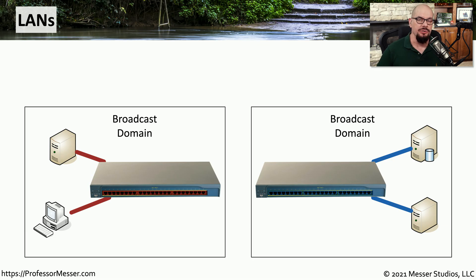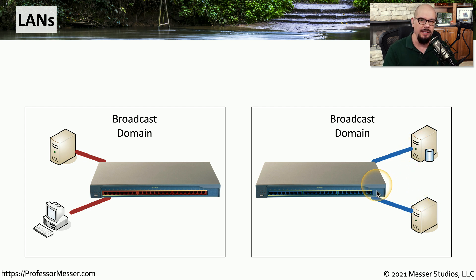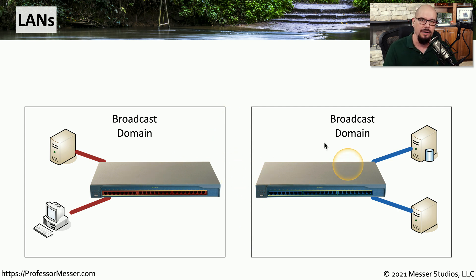Many network administrators like to segment the network into different broadcast domains. This is sometimes done to allow additional security features, or we may need to provide separation just to keep the network organized. One way to do this is to have completely separate switches — one switch with one broadcast domain for the red network, and a completely separate switch for the blue broadcast domain. Because these are physically separated switches, there's no way for anyone on the red network to communicate to the blue network, and vice versa.